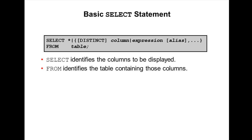In a SELECT statement, you can specify column names, or instead of all columns you can specify star (*). You can also use keywords like DISTINCT, or an expression, or an alias — an alias is just another name for a column or expression. The FROM clause specifies the table name.